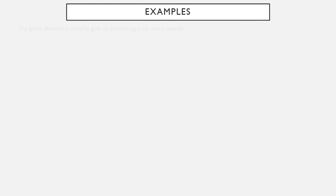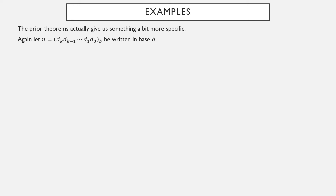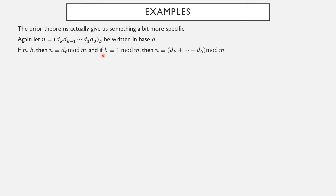The prior theorems actually give us a bit more information than we initially stated. If m is a factor of b, then n is equivalent to its last digit modulo m. If b is equivalent to 1 modulo m, then n is equivalent to the sum of the digits modulo m. In both cases we can make a statement about divisibility, but you don't have to phrase it only in terms of whether m is a factor — you can use these equivalences directly to compute remainders.